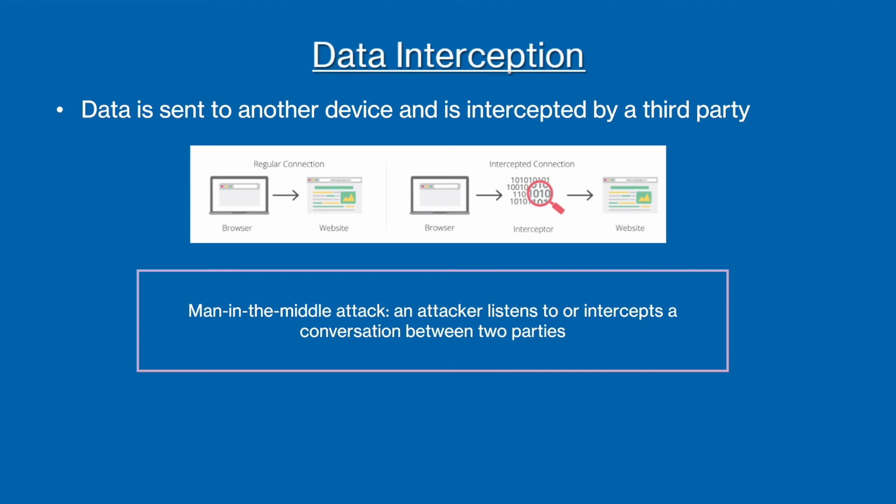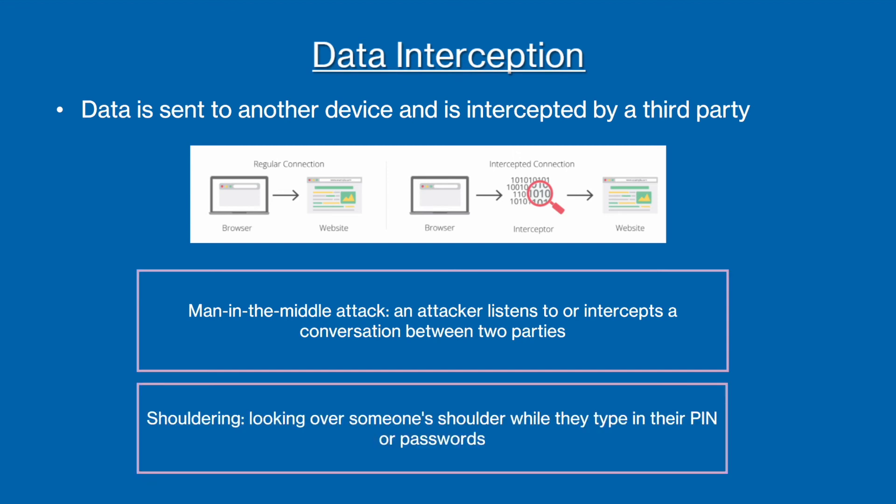In this example, you and me. The second type of data interception method is called shouldering. This is where the attacker looks over someone's shoulder while they enter their PIN or passwords.